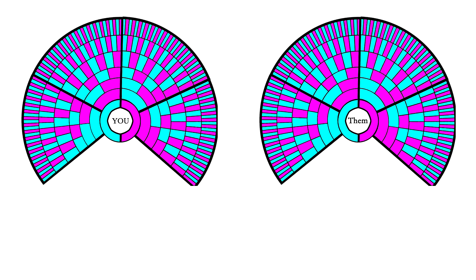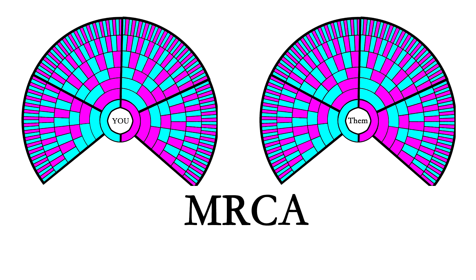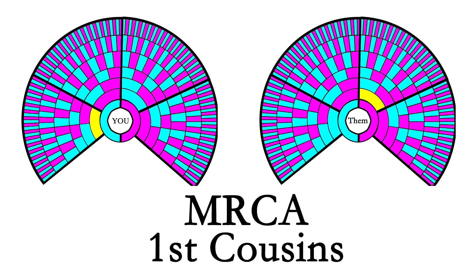There is a difference between a genealogical family tree and a genetic family tree, and it's very important to understand those differences. When you take your test and get a match list, what you want to find is the most recent common ancestor — MRCA. For first cousins, that means I'm going to match that person at a grandparent level — that's the person I have in common with them.